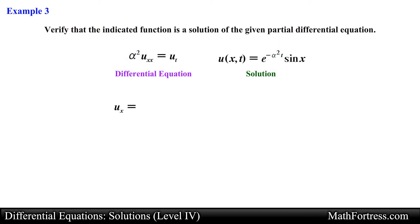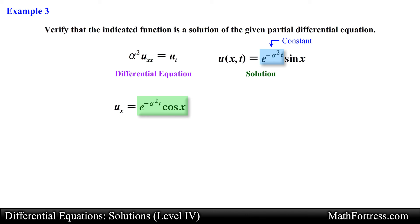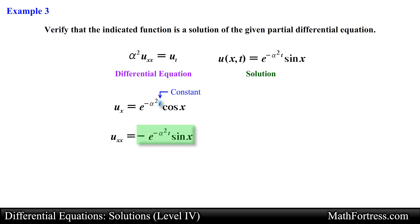Let's first find the partial derivative of u with respect to x. Keeping the variable t constant and applying the chain rule, we obtain the following expression. Remember that since we are keeping t constant, the entire exponential expression is also a constant — there is no need to apply the product rule. Taking the partial derivative, we obtain the following expression. Next, we take the partial derivative with respect to x once again and obtain the following expression.